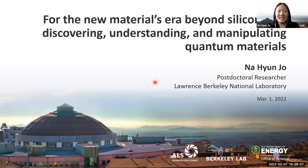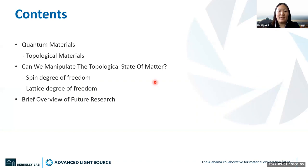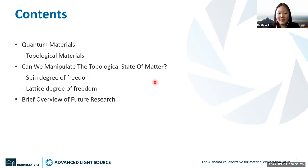Let's get started. The contents are as follows: first, I will talk about what quantum materials are. Then I'll move on to explaining a quantum material called topological material, and then move on to a recent condensed matter physics question about how we can manipulate such a topological state of matter — in particular, focusing on spin degrees of freedom and lattice degree of freedom tuning. I'll finish with a brief overview of future research.